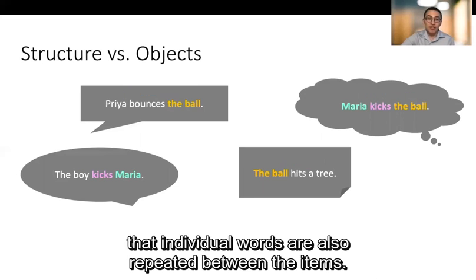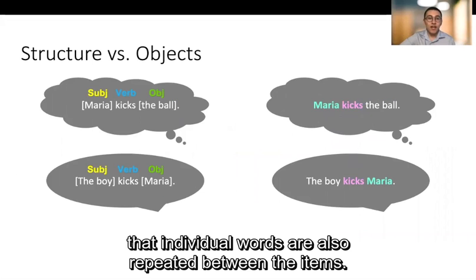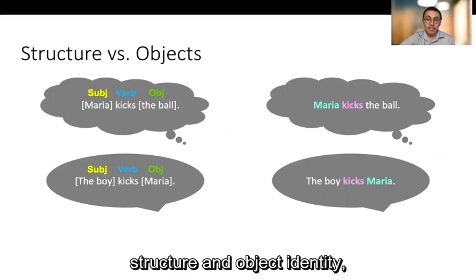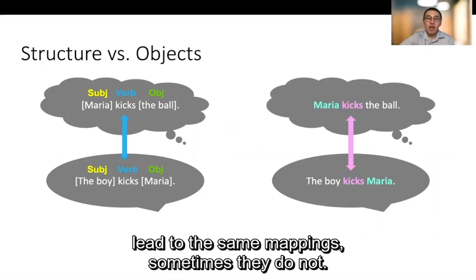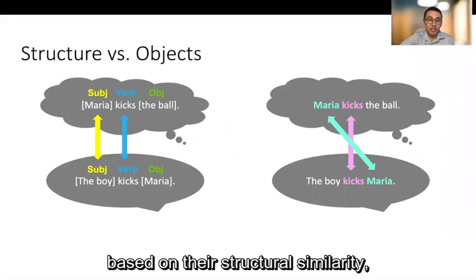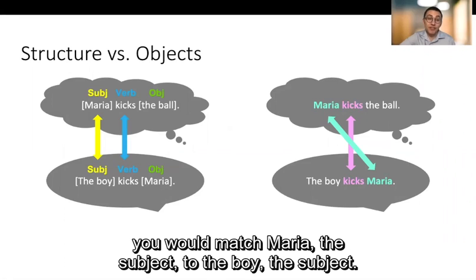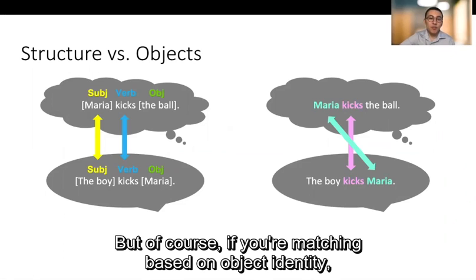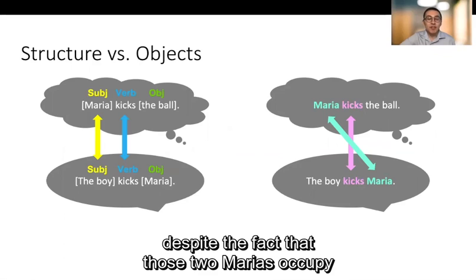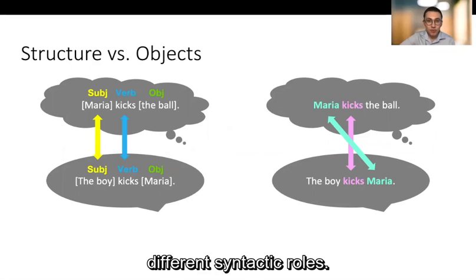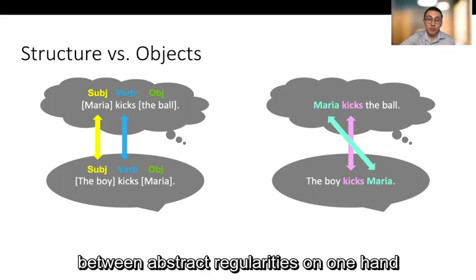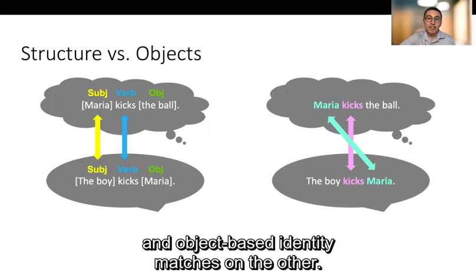You might also notice that individual words are also repeated between the items and it's important to note that while sometimes these two dimensions structure and object identity lead to the same mappings, sometimes they do not. For example if you're analyzing these two sentences based on their structural similarity you would match Maria, the subject, to the boy, the subject. But of course if you're matching based on object identity you make a different match from Maria to Maria despite the fact that those two Marias occupy different syntactic roles. So there's clearly sometimes a conflict between abstract regularities on one hand and object-based identity matches on the other.